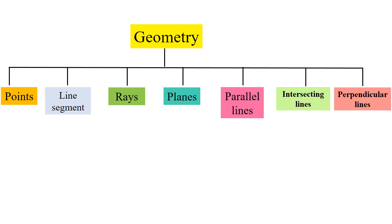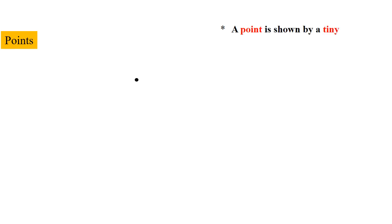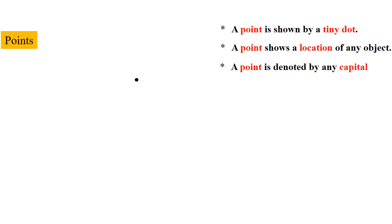Let's start with the first figure, that is point. If we make a dot on this white page with the help of a pencil, this tiny dot is called a point. A point is shown by a tiny dot and it shows an exact location of any object. A point is denoted by any capital letter of the English alphabet. Let's denote this point as capital P, and it can be read as point P.